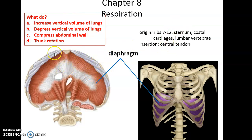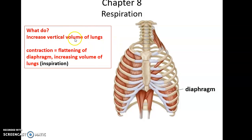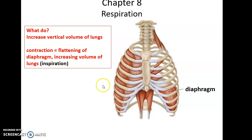The diaphragm is a big thin sheet of muscle that has a tendon in the center, so it inserts into itself. It increases the vertical volume of the lungs. The dome-shaped diaphragm, when it contracts, pulls down as it flattens out — pulling down, increasing the volume in the lungs, thereby allowing air to flow into the lungs. That's inspiration — air flowing into the lungs.